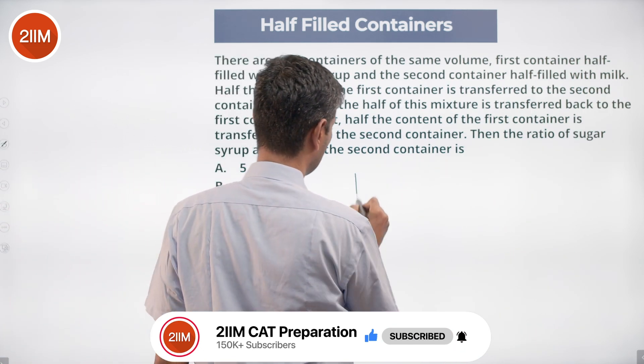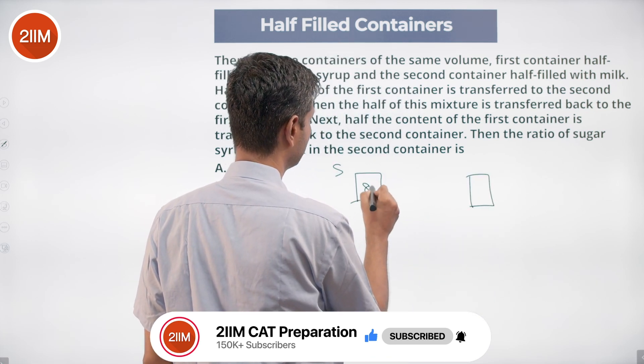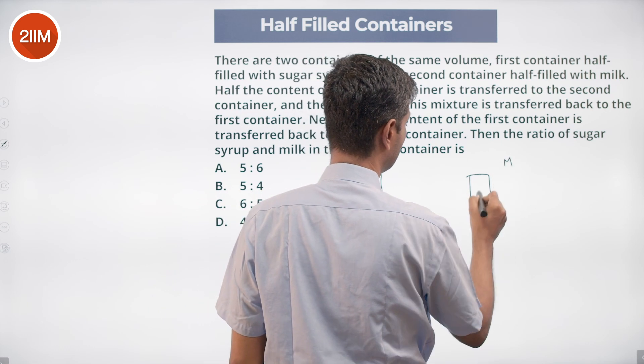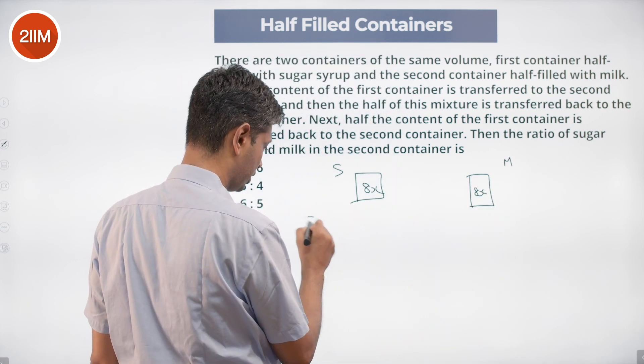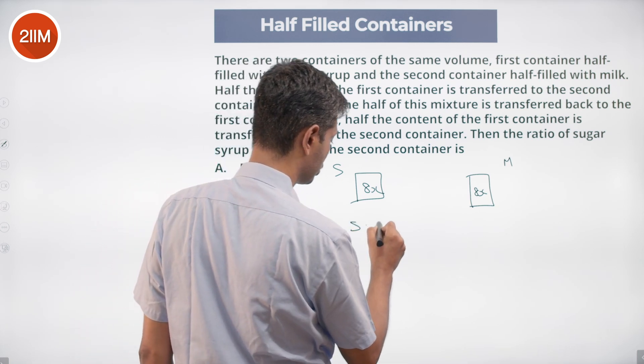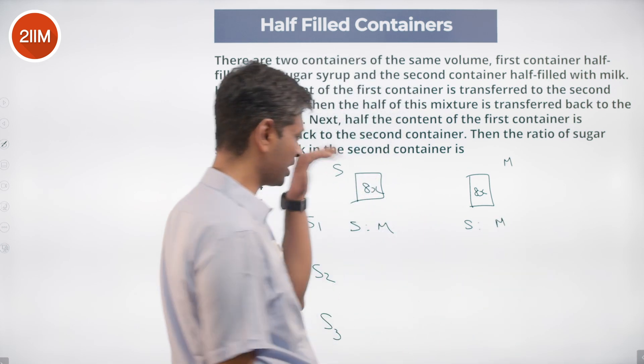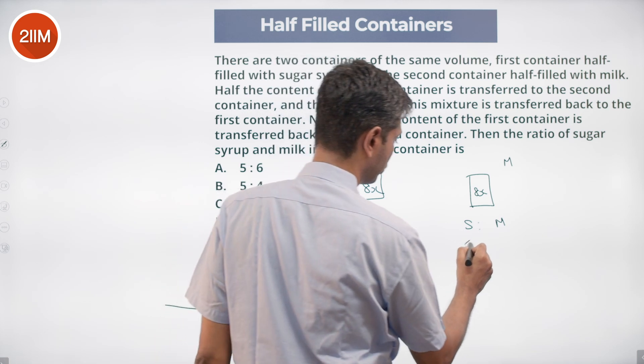Say all remains the same. Container 1, container 2. This has sugar to start with of say 8x, milk to start with of 8x. Half of this goes here. Step 1, step 2, step 3. I'm going to track sugar is to milk, sugar is to milk. After the first transfer is made, this becomes 4x and 0, this becomes 4x and 8x.